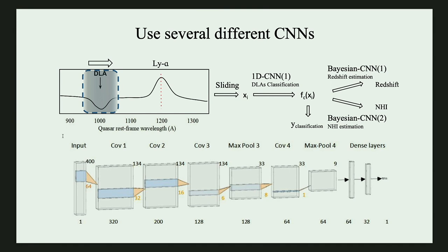After we obtain a very good DLA catalog, we use other CNNs to do the redshift and column density estimation. In order to get statistical inference and uncertainty estimates, we are trying to establish Bayesian CNNs, where the weights transferred between the layers are no longer fixed numbers but estimated distributions.